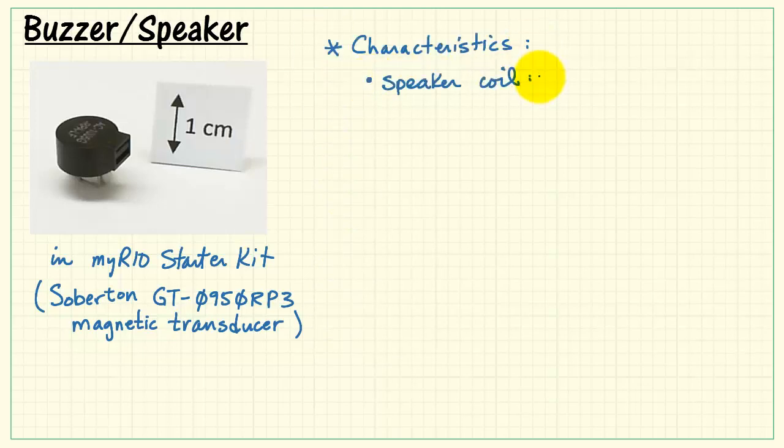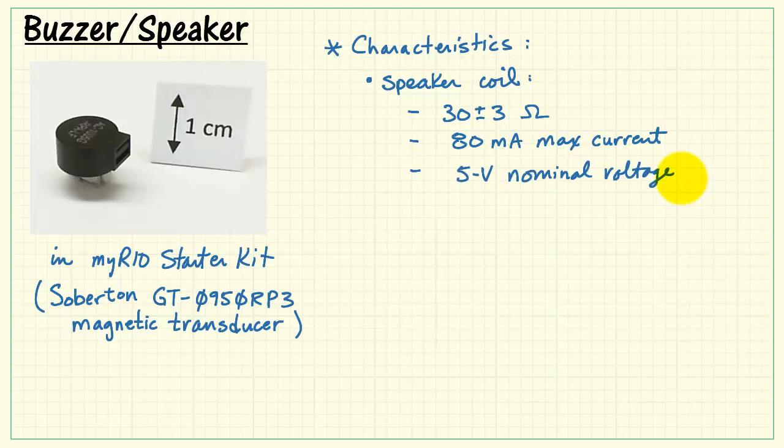Let's take a look at some of its important characteristics. It has a speaker coil of approximately 30 ohms, requires 80 milliamps max current, and it has a 5 volt nominal voltage. The overall voltage range is 4 to 6 volts.